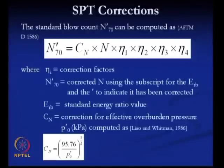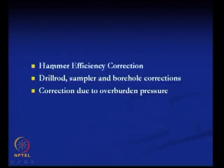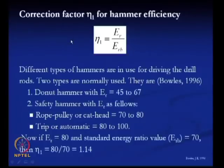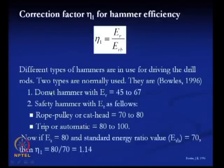Other correction factors include those due to hammer efficiency, overburden pressure, drill rod, sampler, and borehole diameter. The first correction factor is the ratio of Er (energy ratio) to Erb (standard energy ratio). Depending on the type of hammer, the Er value varies. Two types of hammers are generally used: the donut hammer and the safety hammer. For the donut hammer, Er varies from 45 to 67. For the safety hammer with rope-pulley or cathead system, Er is 70–80, and for trip or automatic release, Er is 80–100.